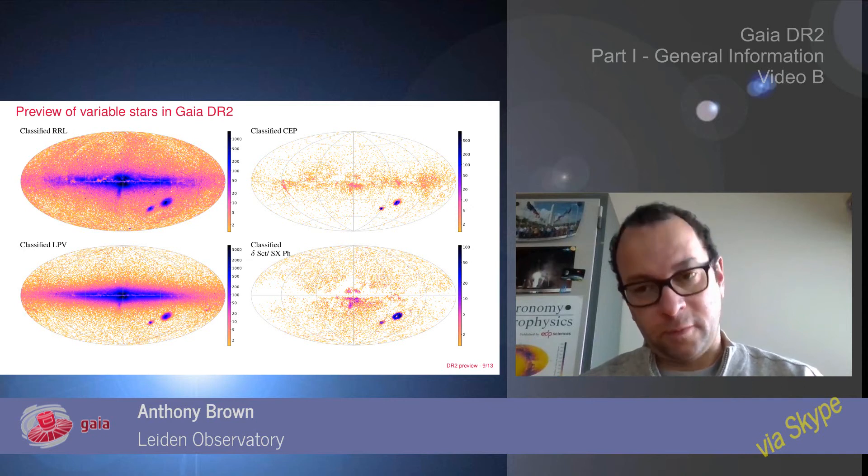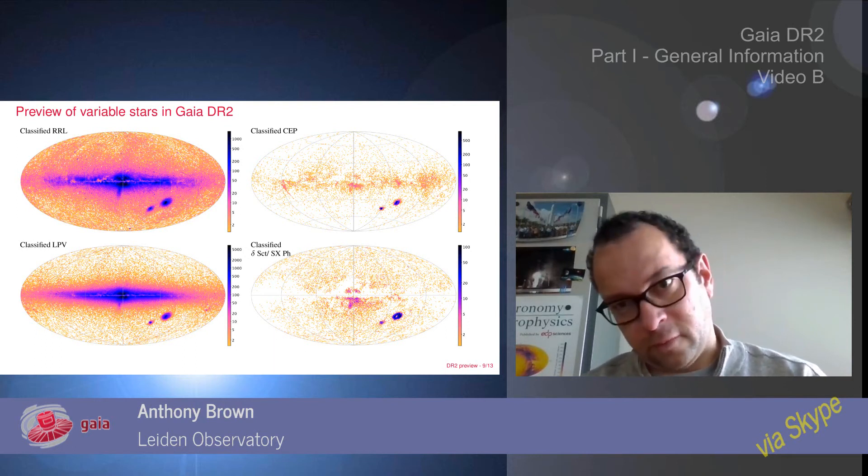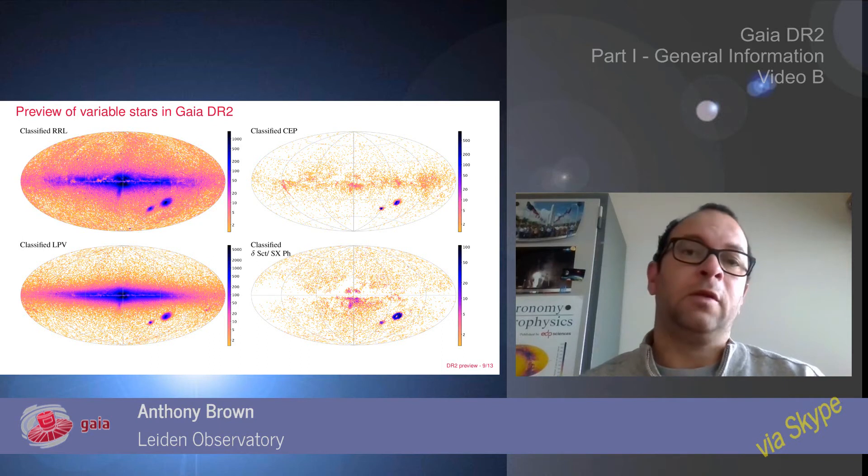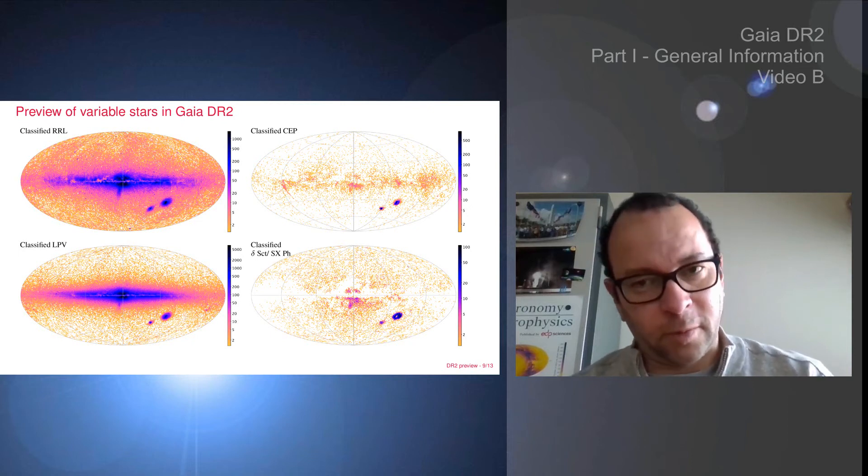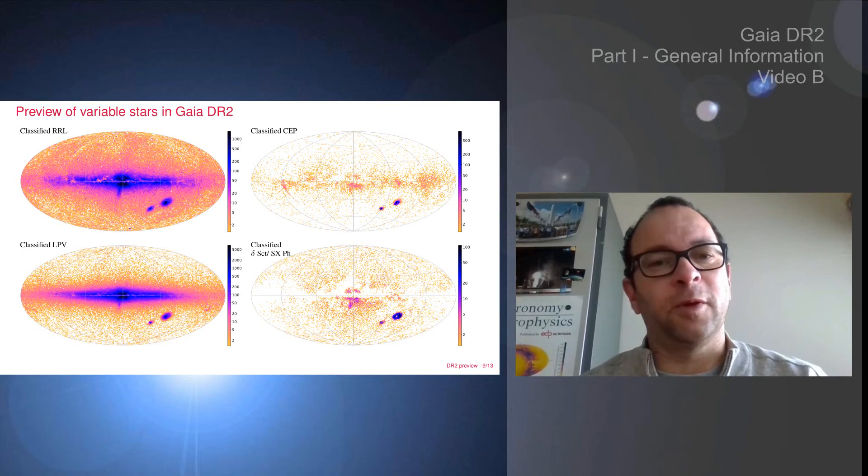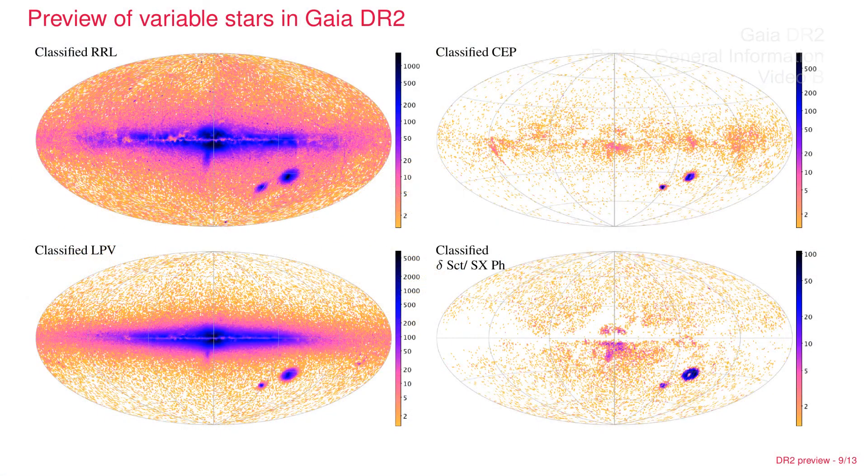Subsequent to this classification, a subset of these variable stars undergoes a specialized treatment, making use of the fact that if you know that it's an RR Lyrae or a Cepheid that you can start deriving things about the star like the periods. They receive a specialized treatment, but that's not done for all the half a billion variable stars, but for a good fraction of that.